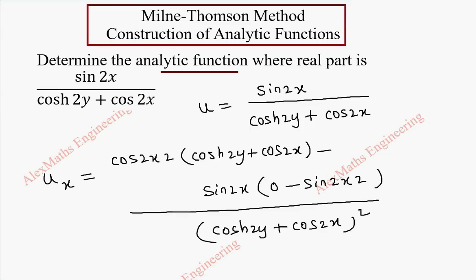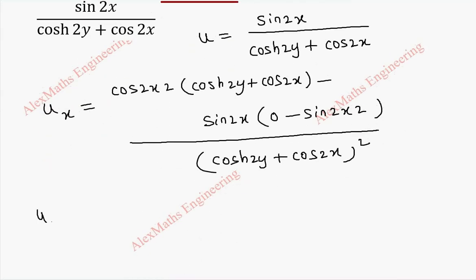Now as a next step, we have to find u_x of z comma 0 wherever x is there, we have to replace it with z and y is 0.